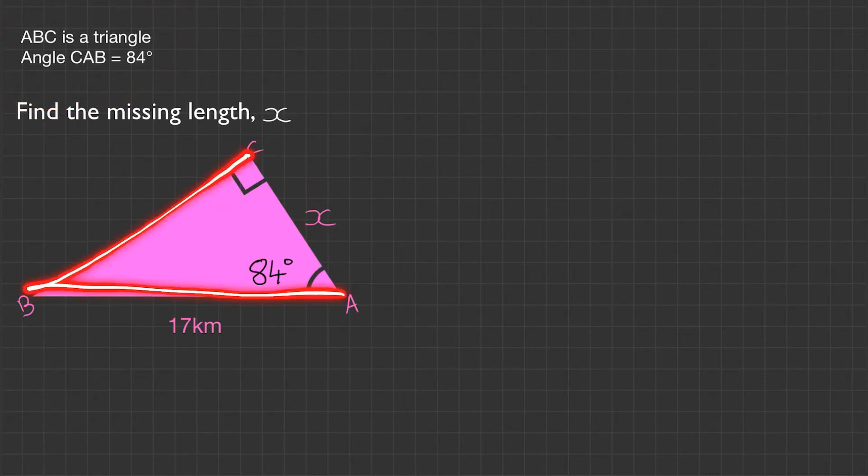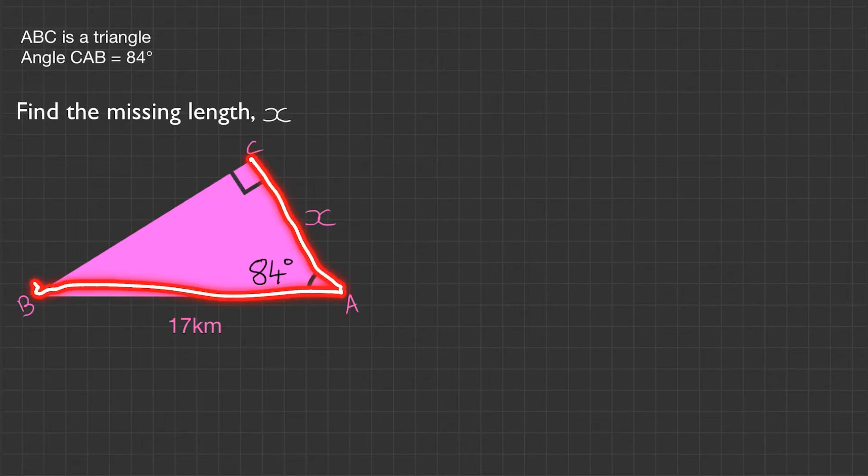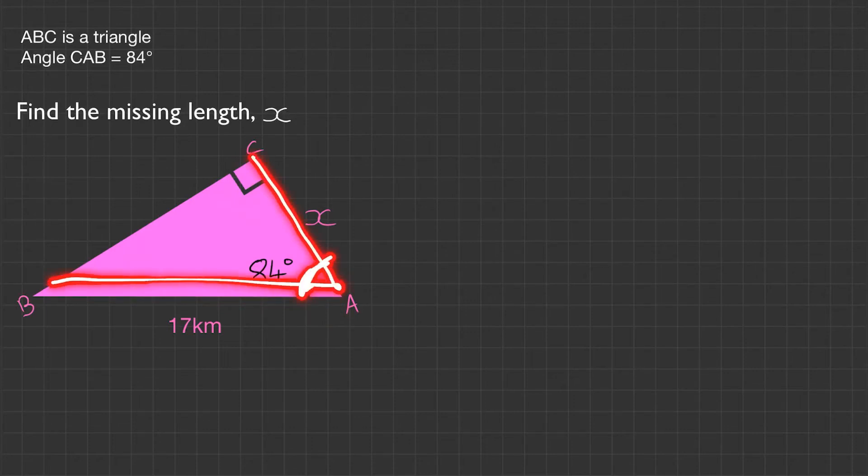The information at the top says ABC is a triangle. Angle CAB is 84 degrees. How to read this is CAB - the angle in the middle, so it will be this particular angle. It's a nice little tip to look at that letter in the middle. So this information is just stating what we can already see. Let's use the step-by-step guide.